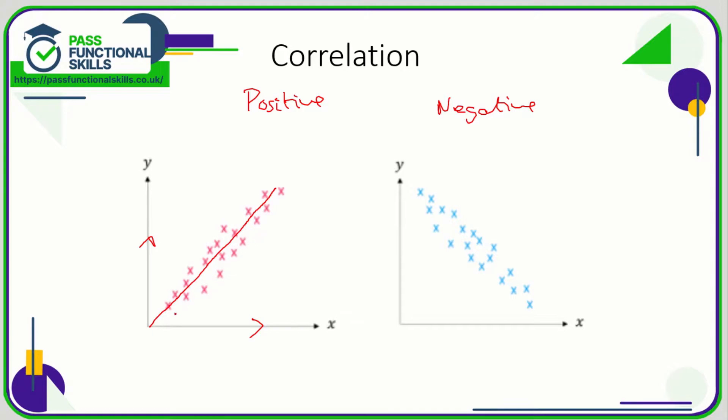Sometimes you don't even need to draw the line in. Like in the second one here, we can clearly see that there is a trend going down, so the line going down means this is negative correlation. As we increase our value for x, we are decreasing our value for y.